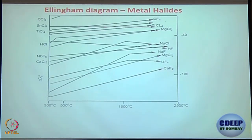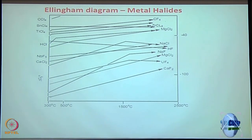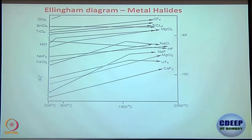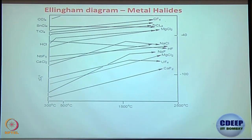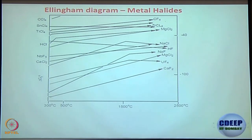There are also Ellingham diagrams possible for metal halides, though you do not need to remember all of these — most often you will be provided with the Ellingham diagram. You should know which is the most electropositive metal and thereby what the curve for it should be. We have now seen oxide Ellingham diagrams, sulphide Ellingham diagrams, and metal halide Ellingham diagrams.